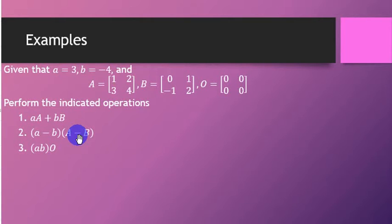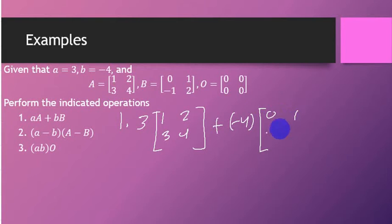All right. Let us start with the first one. We have here in number 1, scalar A times matrix A plus scalar B times matrix B. If we're going to write that using these values, we're going to have 3 multiplied to the matrix 1, 2, 3, 4, plus negative 4 multiplied to the matrix 0, 1, negative 1, 2, which would be pretty simple for us to do.